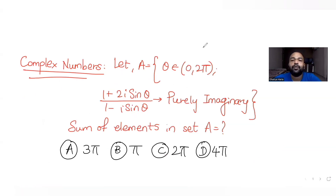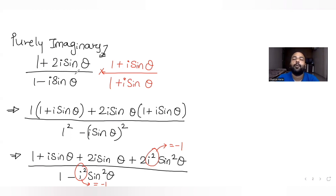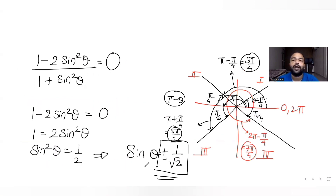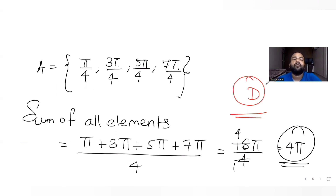The option that matches is 4π, so D is the correct answer. To recap: we multiplied and divided by the conjugate of the denominator to remove the imaginary part from the denominator, simplified the expression to the form a + ib, then equated the real part to zero since the expression is purely imaginary. This gave sinθ = ±1/√2, which occurs four times over 0 to 2π, giving the elements π/4, 3π/4, 5π/4, and 7π/4, whose sum is 4π.